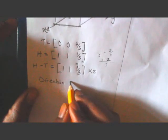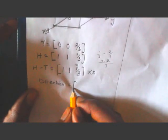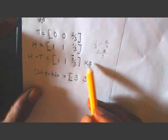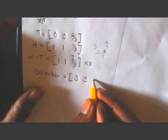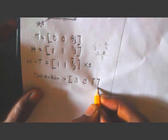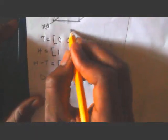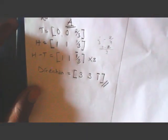You can multiply by 3 to simplify: 1 times 3 is 3, 1 times 3 is 3, and 1 over 3 times 3 is 1. So the direction for A is (3, 3, 1). Now for the direction of B — here is our diagram for B.